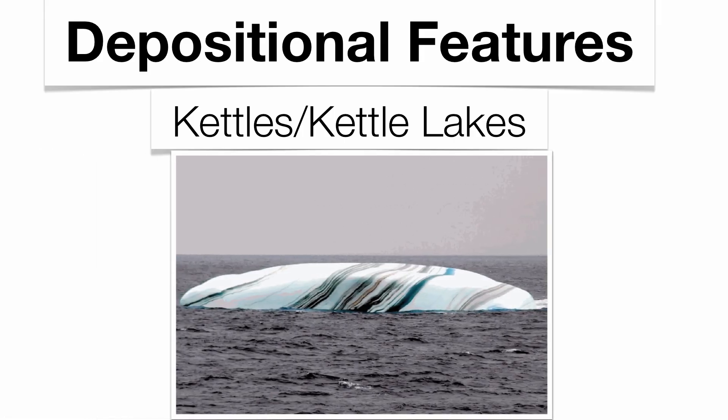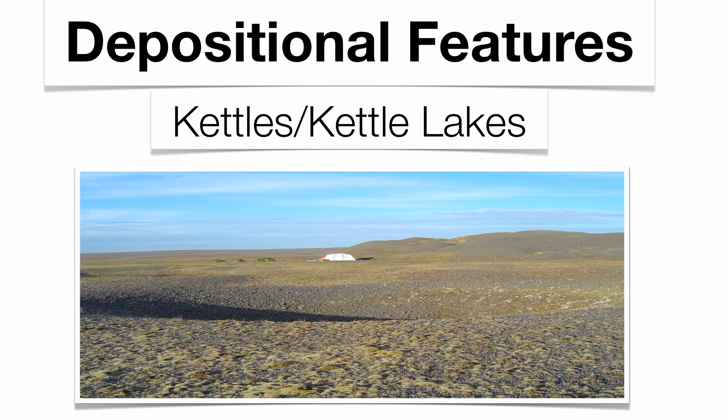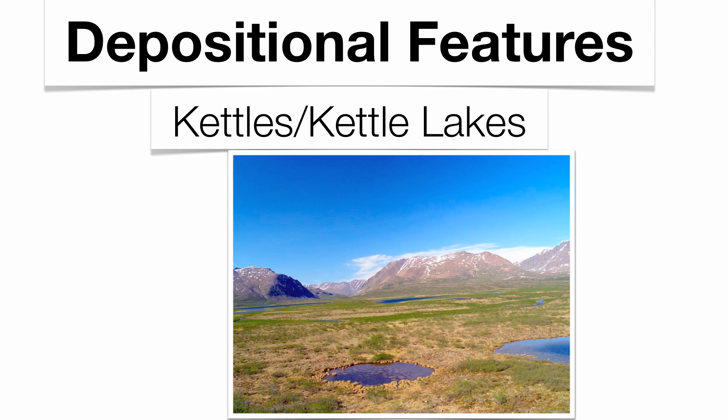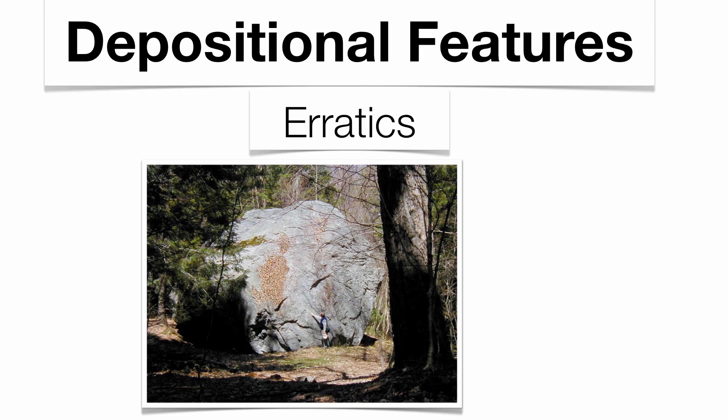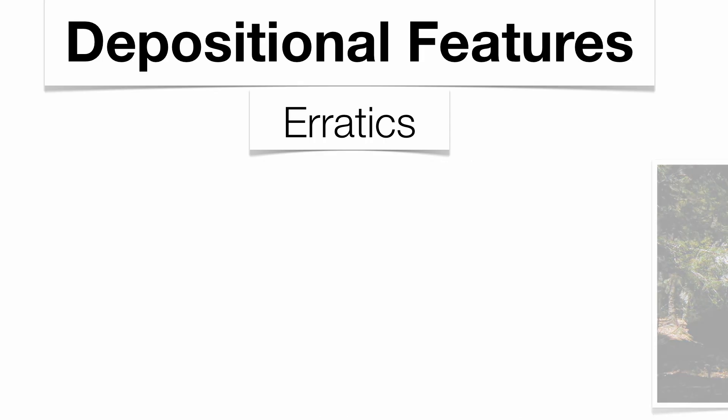Continuing with the depositional features: big chunks of ice that break off in the water are called icebergs. Big chunks of ice that break off on land are called kettles — they leave a big dent in the ground. Sometimes those kettles get filled up with water and they're called kettle lakes. And finally, you get something called an erratic. These are monstrous boulders left over from the glaciers. Glaciers have a tremendous carrying power, so some of the deposition that takes place with these sediments can be quite massive in size.